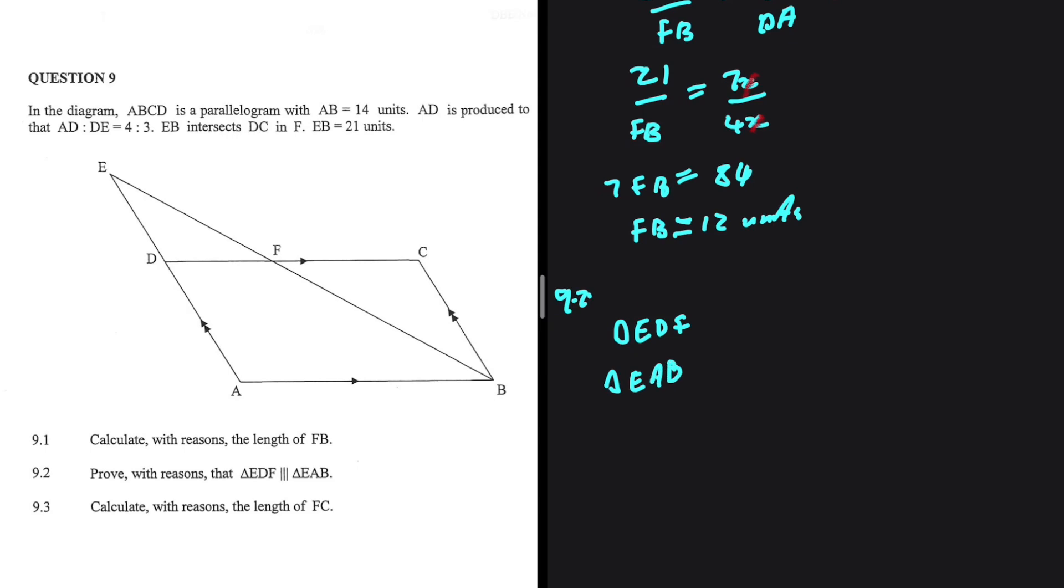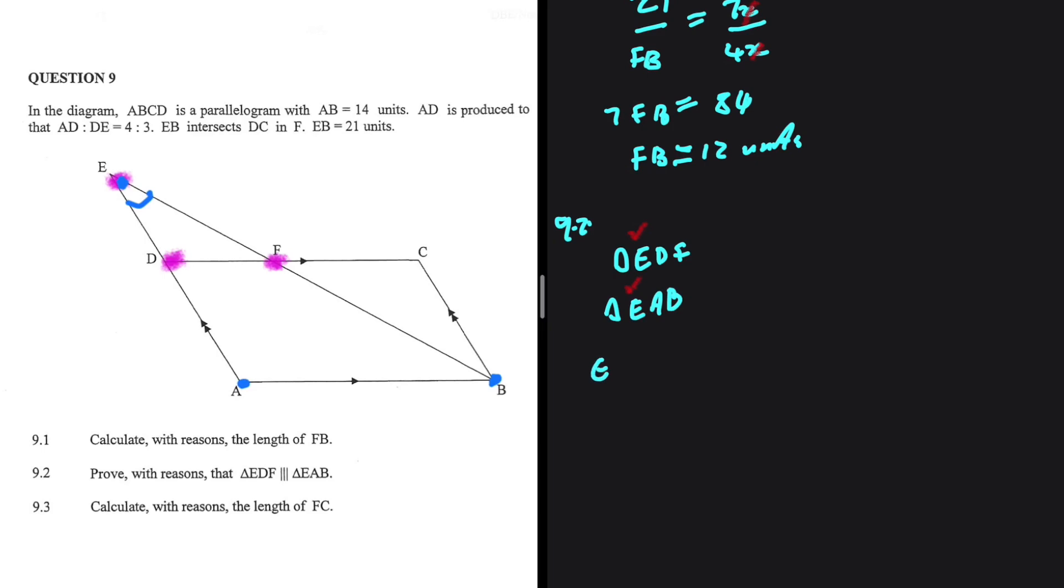Angle E on the two triangles should be equals to each other. So let's take a look at triangle EDF and triangle EAB. We can see that angle E is a common angle. So we can say that E is equals to E. This is a common angle of the two triangles.